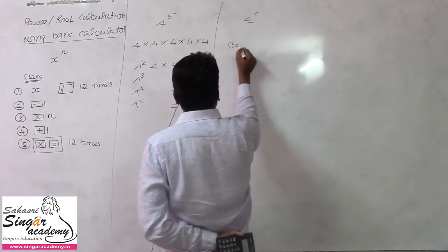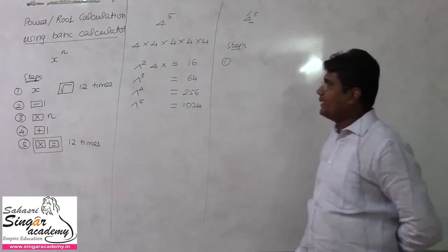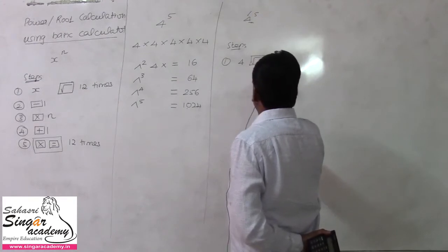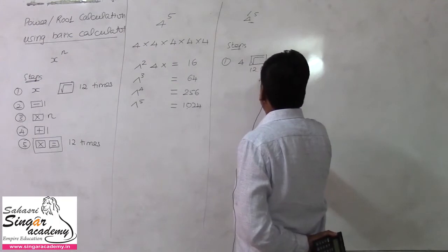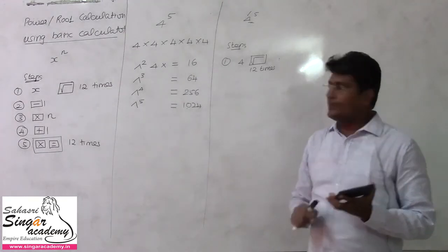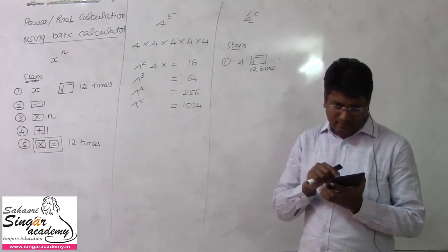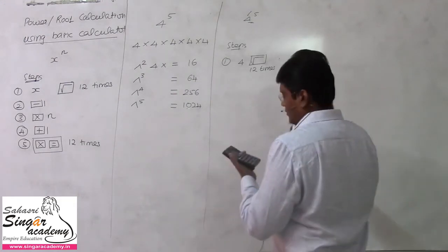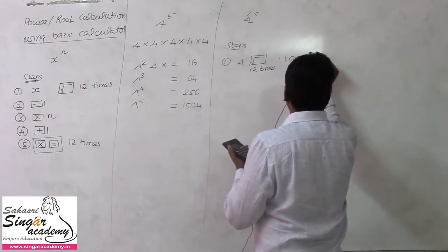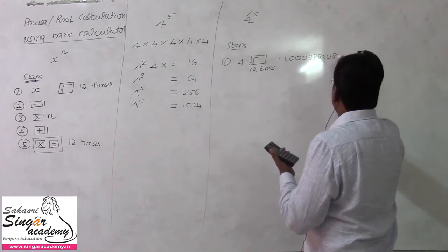Step 1: Input the x value, which is 4, then press the root button 12 times. Press it the 1st, 2nd, 3rd, 4th, 5th, 6th, 7th, 8th, 9th, 10th, 11th, and 12th time. The answer you get is 1.000338500850804.